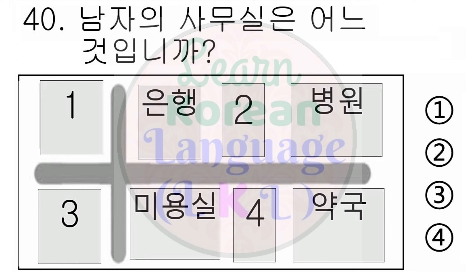40번. 영수 씨 사무실은 어디에 있어요? 제 사무실은 은행하고 병원 사이에 있어요. 다시 들으십시오. 영수 씨 사무실은 어디에 있어요? 제 사무실은 은행하고 병원 사이에 있어요.